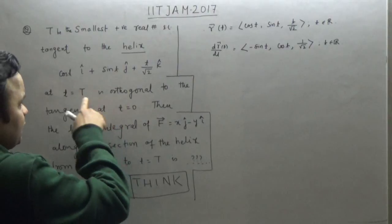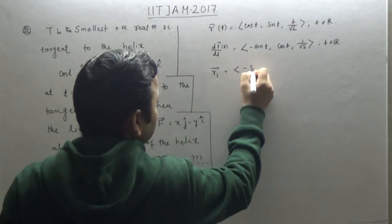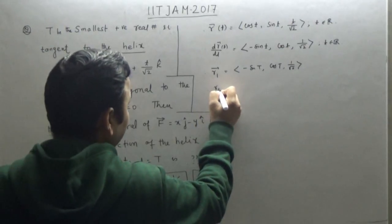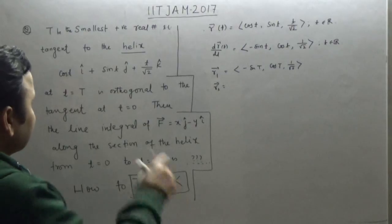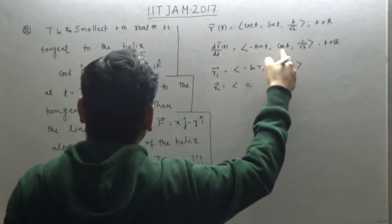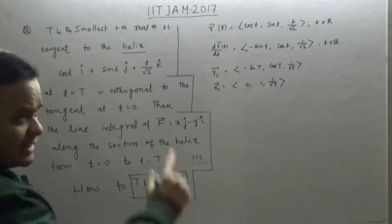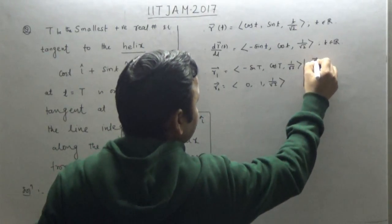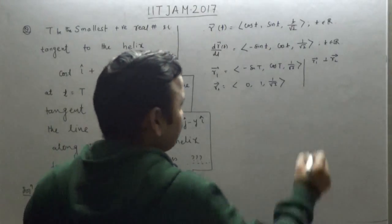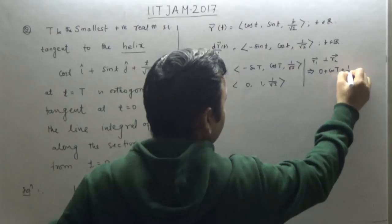I need to find the tangent at t equal to capital T and at t equal to zero. Let r1 be the tangent vector at t = T: r1 = (−sin T, cos T, 1/√2). Let r2 be the tangent at t = 0: putting t = 0 gives r2 = (0, 1, 1/√2). For these two tangent lines to be orthogonal, their dot product must equal zero.